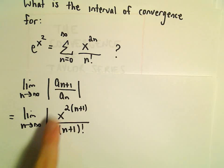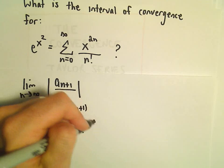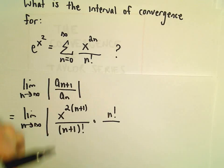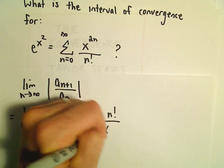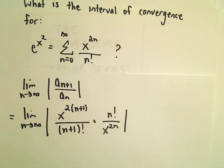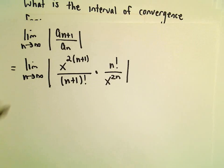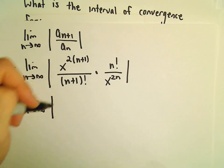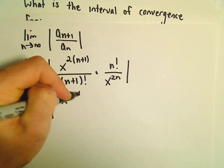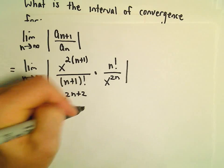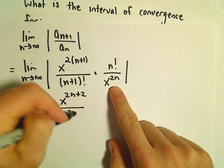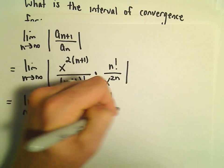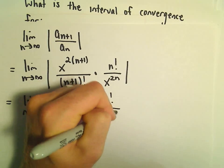And again, normally we divide by the original, but again we can just multiply by the reciprocal. So we'll multiply by n factorial over x to the 2n. So let's see, I'm going to just clean this up a little bit. This would be x to the 2n plus 2. I'm going to put the x to the 2n underneath that. Then we've got n factorial over n plus 1 factorial.